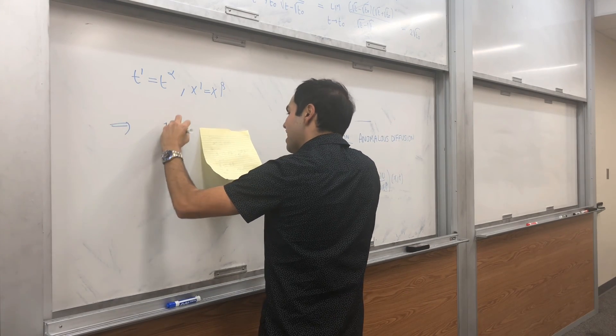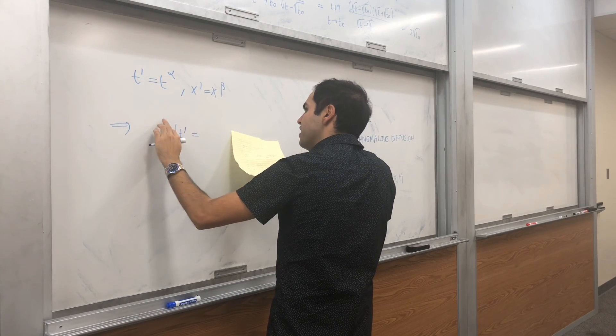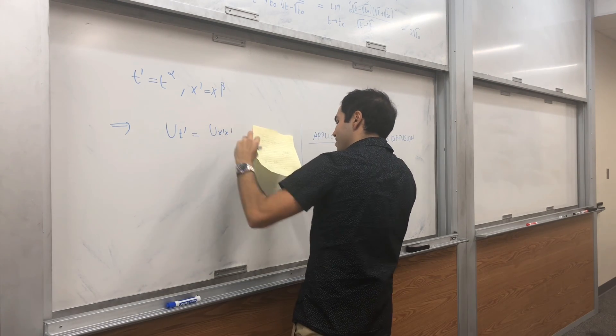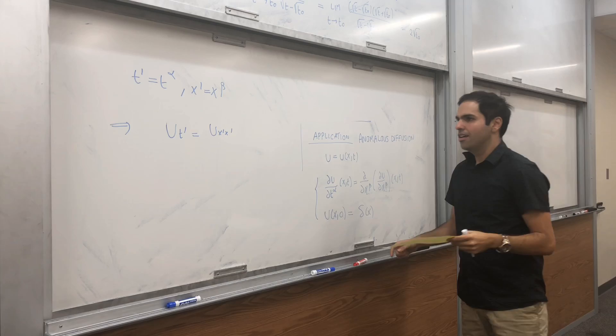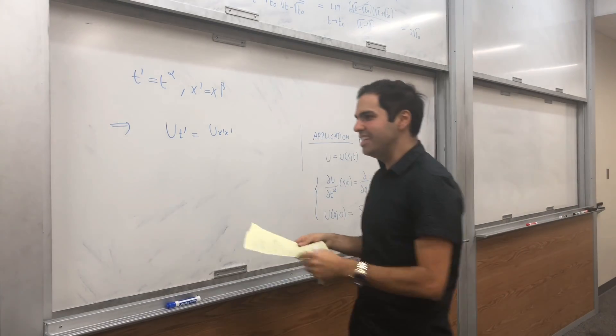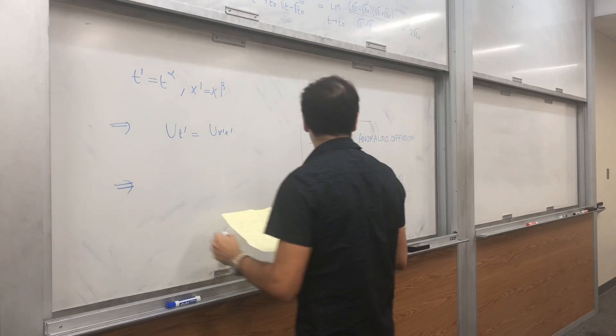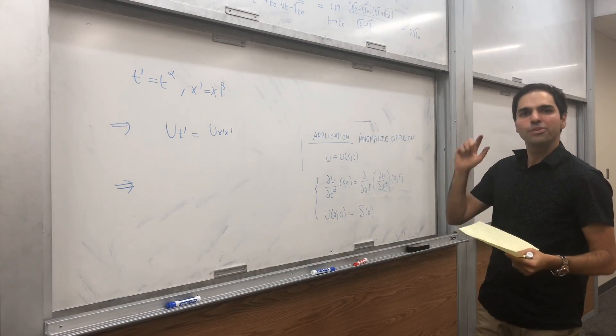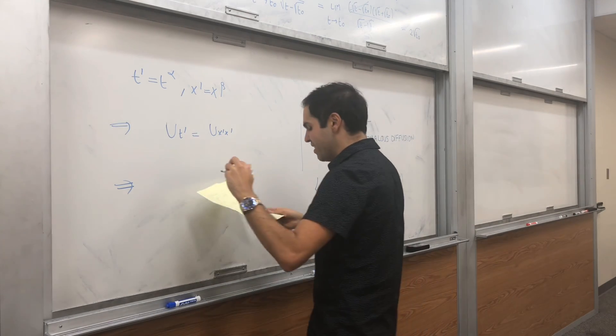So, indeed we get ut prime equal to u x prime x prime, which is the heat equation, the classical heat equation. And initially I think you still have the Dirac delta distribution, so it does give you the fundamental solution,